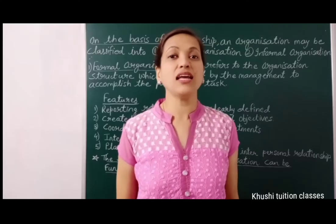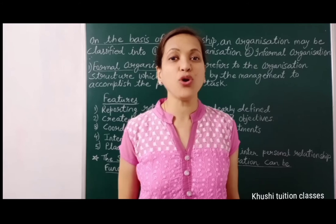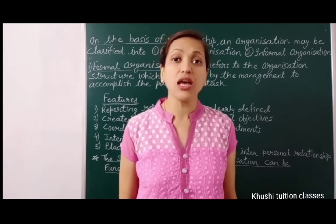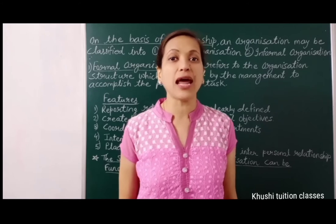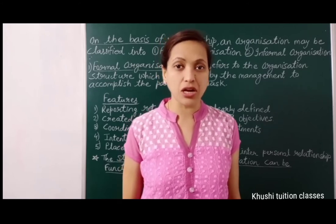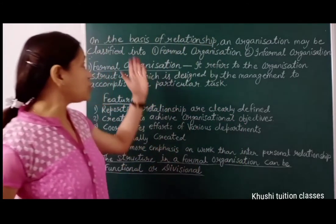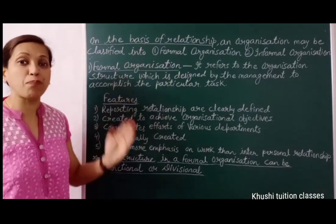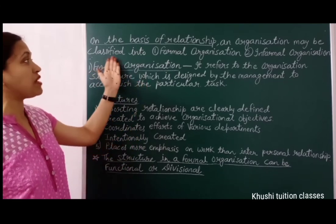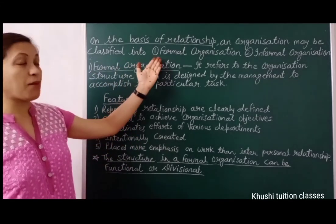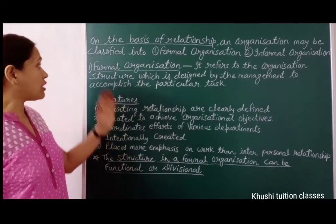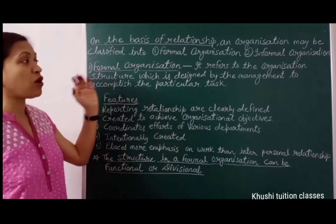Good morning friends. In the last video you learned about functional structure and divisional structure, which depends on the nature and type of activities performed in an organization. Now, on the basis of relationship of employees in the organization, an organization may be classified into formal organization and informal organization. Now what is formal organization?